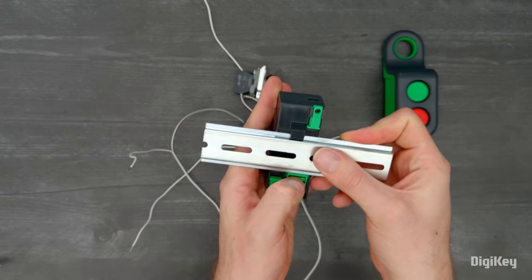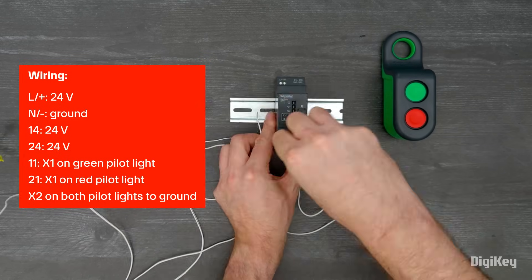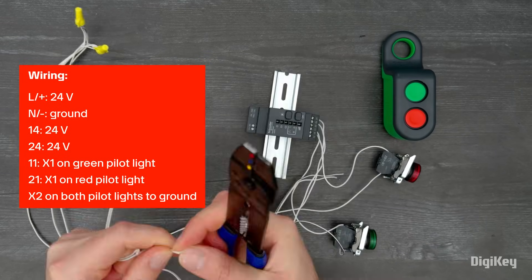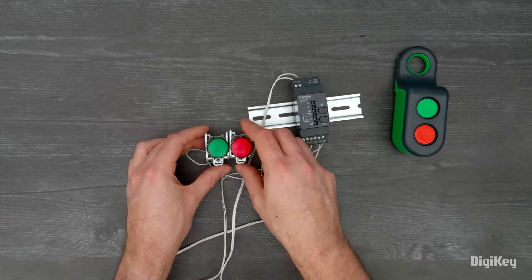Install the receiver on the DIN rail. Wire each relay output of the receiver to each pilot light. We're using a 24-volt DC supply for the receiver and the pilot lights.